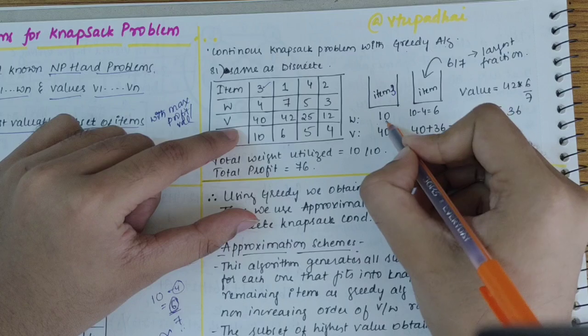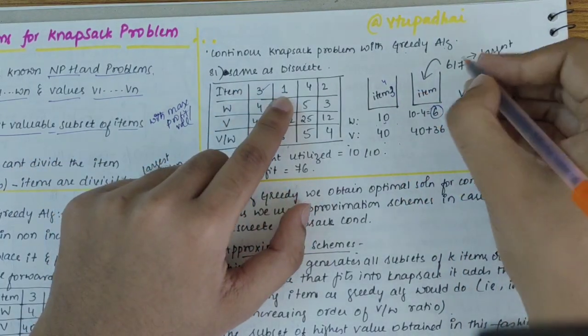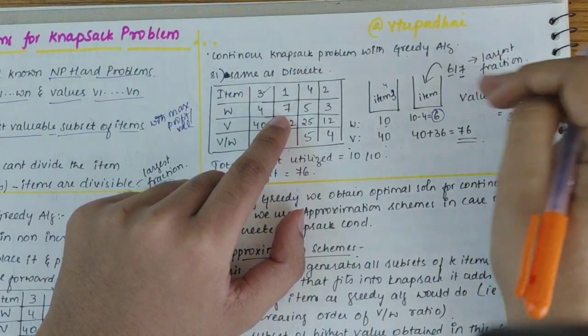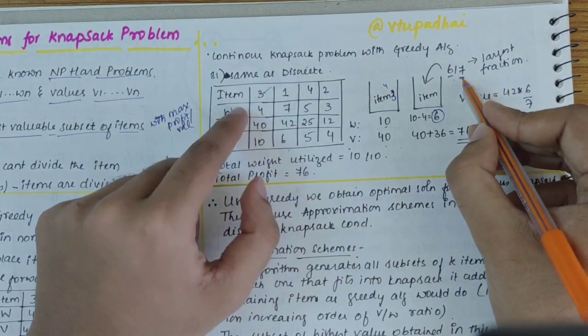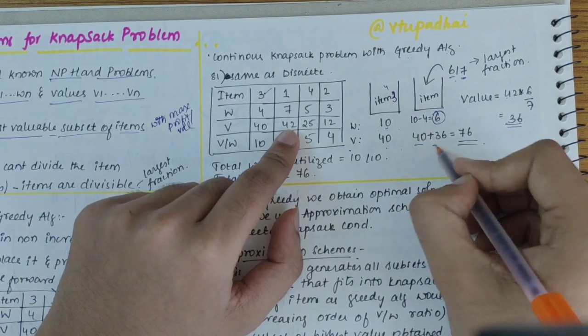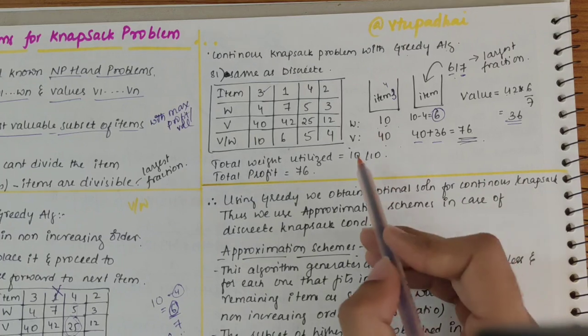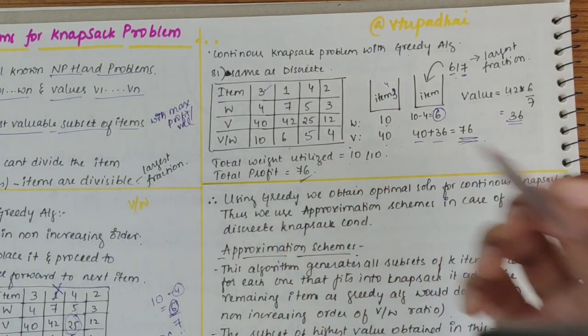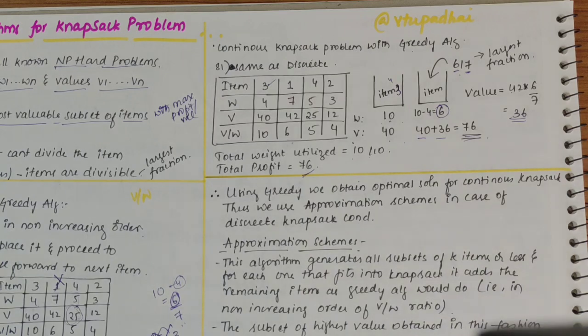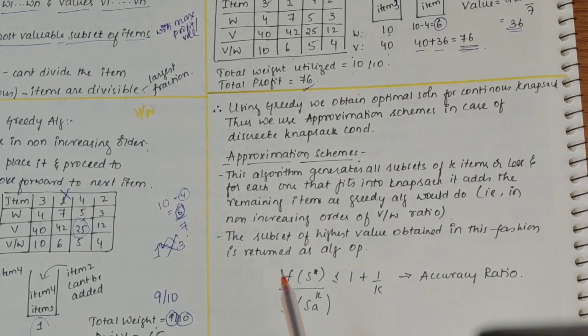If the current item on the list fits into the knapsack entirely, then fill it. If not, then we have to take the largest fraction to fill the knapsack to its fullest capacity and stop. Looking at this example, first we have item 3. Capacity was 10, item 3 weight was 4, so 10 minus 4, 6 is remaining now. The value is 40. Then I have item 1, which has weight of 7, but 6 is the availability. I should take 6 by 7, that is the largest fraction I can store. If I can store 6 by 7 of item 1, the value also alters. It will be 42 into 6 by 7, I get 36. I will add 40 plus 36, that is 76. Now the complete knapsack capacity is utilized, 10 by 10 filled, and profit is 76. If you compare it with discrete, continuous knapsack provides an optimal solution.